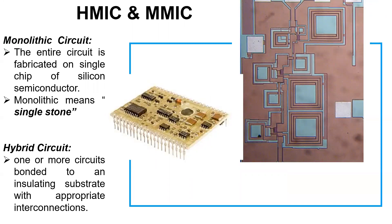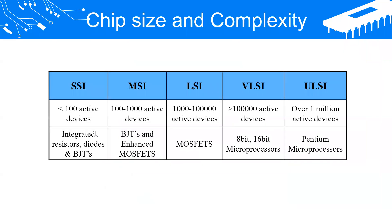For high power applications, hybrid ICs are used. Hybrid ICs combine two or more monolithic ICs in one package. They may also combine monolithic ICs with thick-thin film circuits — that is why it is called a hybrid circuit.